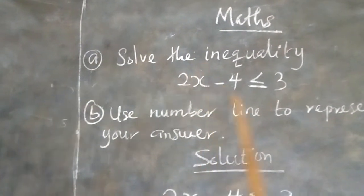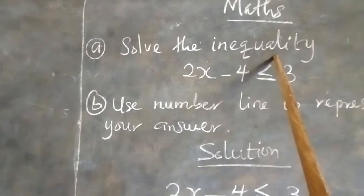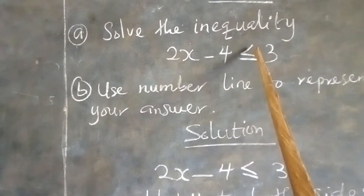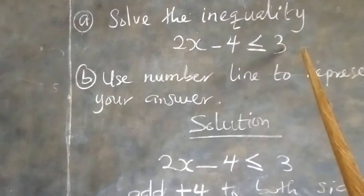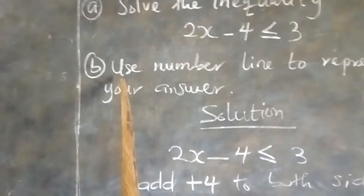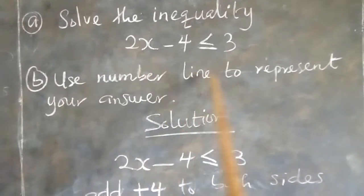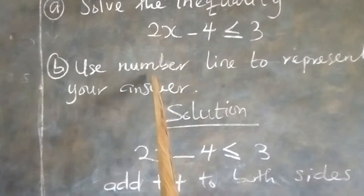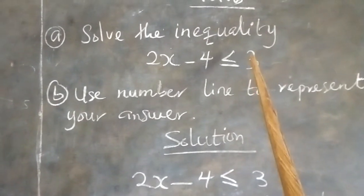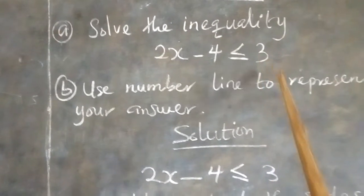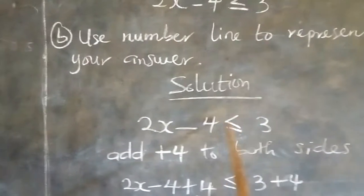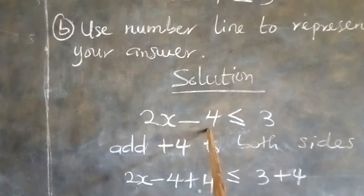Solve the inequality: 2x minus 4 less than or equal to 3. That is the inequality we have to solve. Another question says use a number line to represent your answer. After we have solved the inequality, we have to represent whatever answer we get on the number line. Now let's look at the solution.